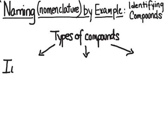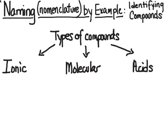So let's start with the types of compounds. There are three. There are ionic compounds, molecular compounds, and acids. So I'm going to begin with ionic compounds over there on the left.